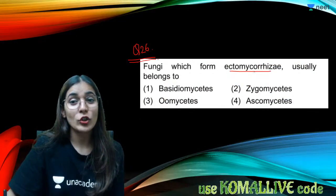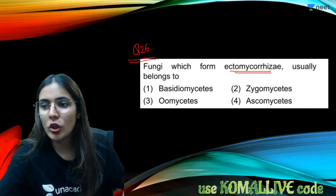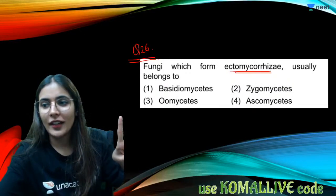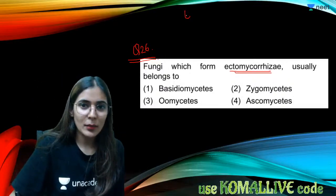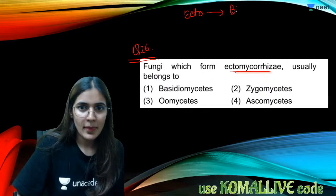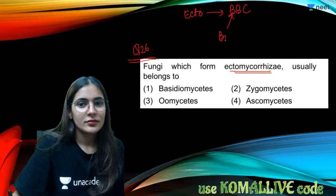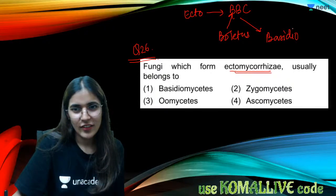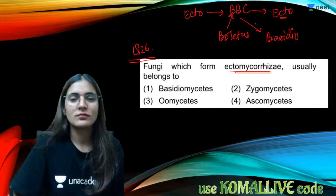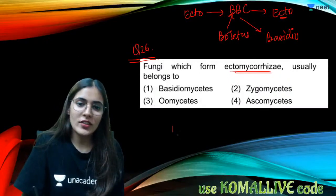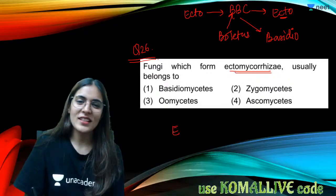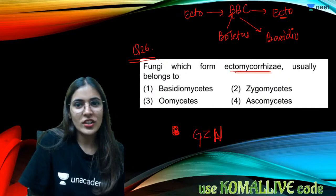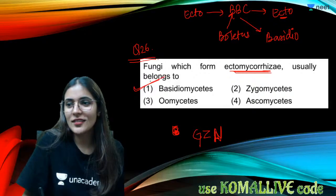Question twenty-six: fungi which form ectomycorrhizal associations usually belong to Basidiomycetes. Remember — for ecto: BBC (Boletus, Basidiomycetes). For endo: Glomus and Zygomycetes. So ectomycorrhizal fungi belong to Basidiomycetes.